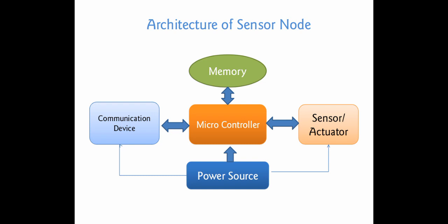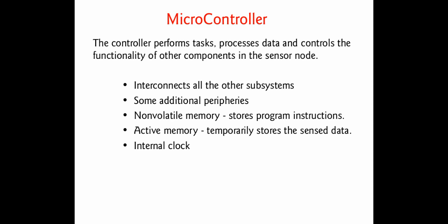Out of all of these, the microcontroller is the best and most suitable for the wireless sensor network's sensor node. Because it has features like consuming less energy for processing data, we can add more peripherals to these components, and we can easily write programs for these microcontrollers. Whereas in other components — microprocessors, FPGA, or ASIC — they consume more energy, and it also takes more time to write programs for those devices.